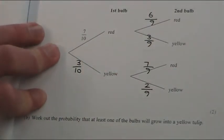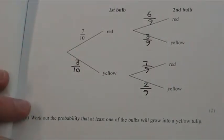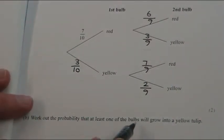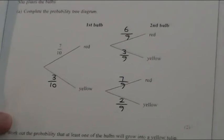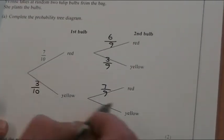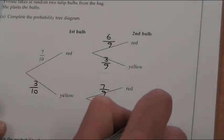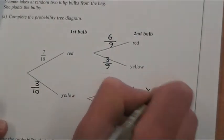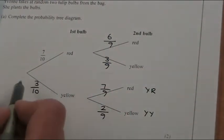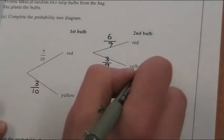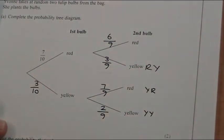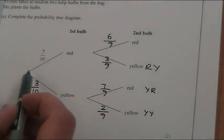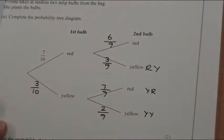And there you get 2 marks. So this says at least one of the bulbs will be yellow. So here, if we go yellow and then yellow, at least one is yellow. If we go yellow then red, at least one of these is yellow. If we go red first but then yellow, we still get at least one being yellow. The only way we can't get at least one yellow is going red red, so we're not interested in that one.